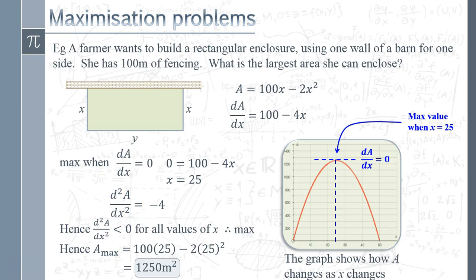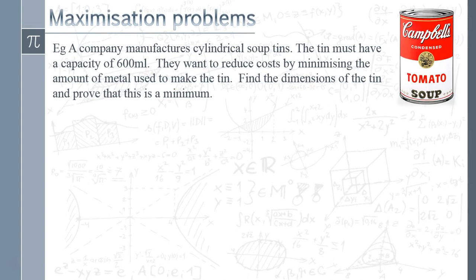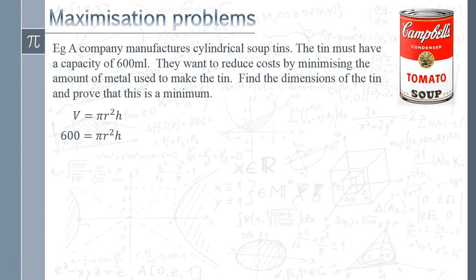That was a reasonably straightforward problem. Now let's look at something a bit more technical. We've got a tin of Campbell's condensed tomato soup — other manufacturers are available. We need to make a tin with a volume of 600 milliliters, and the manufacturer wants to minimize the amount of metal used to keep costs down. We can adjust the dimensions to keep the volume at 600 while making the surface area as small as possible. An obvious starting point is the volume formula: V = πr²h, and we're told that equals 600.